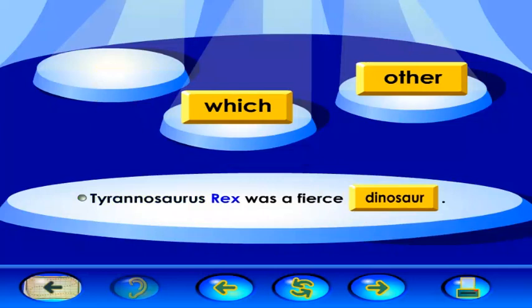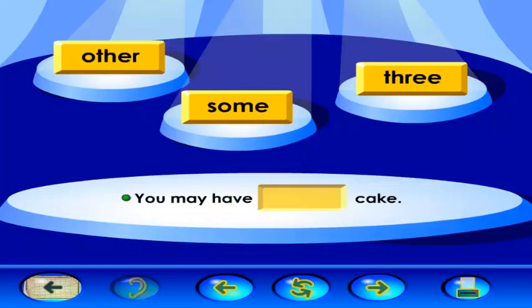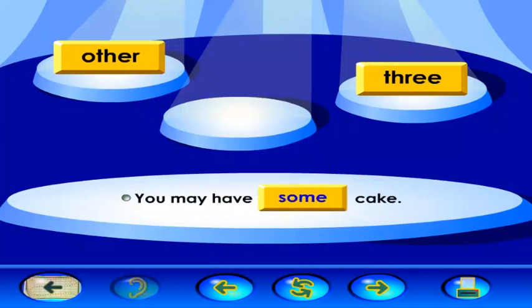Tyrannosaurus rex was a fierce dinosaur. Find the sight word that goes in this sentence. You may have cake. You may have some cake.